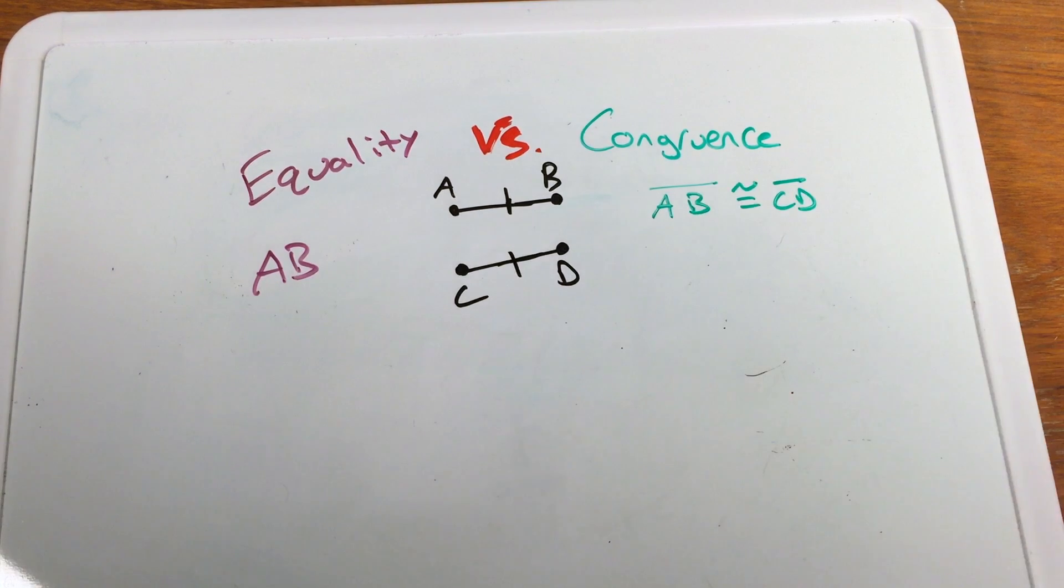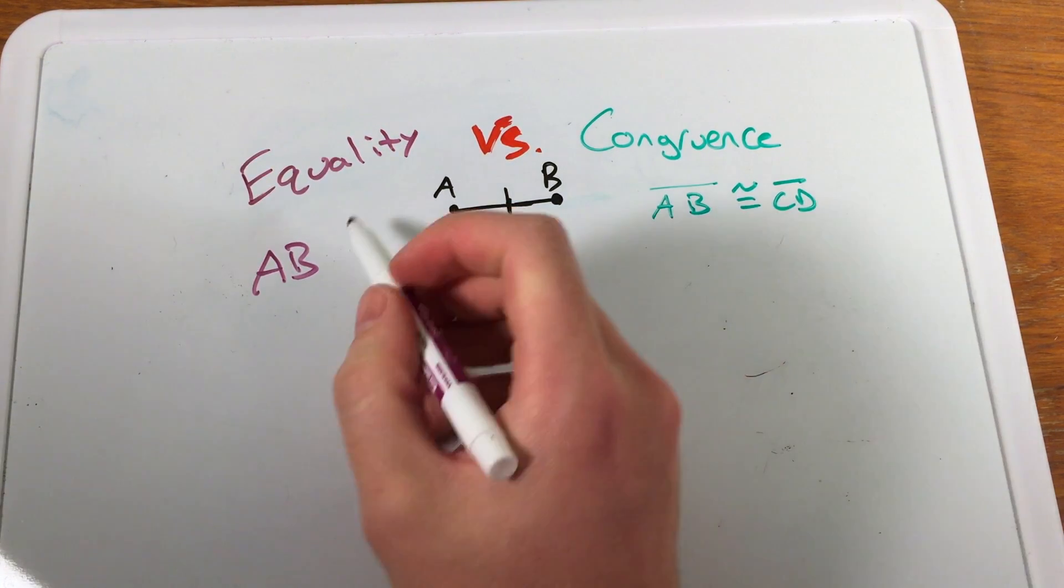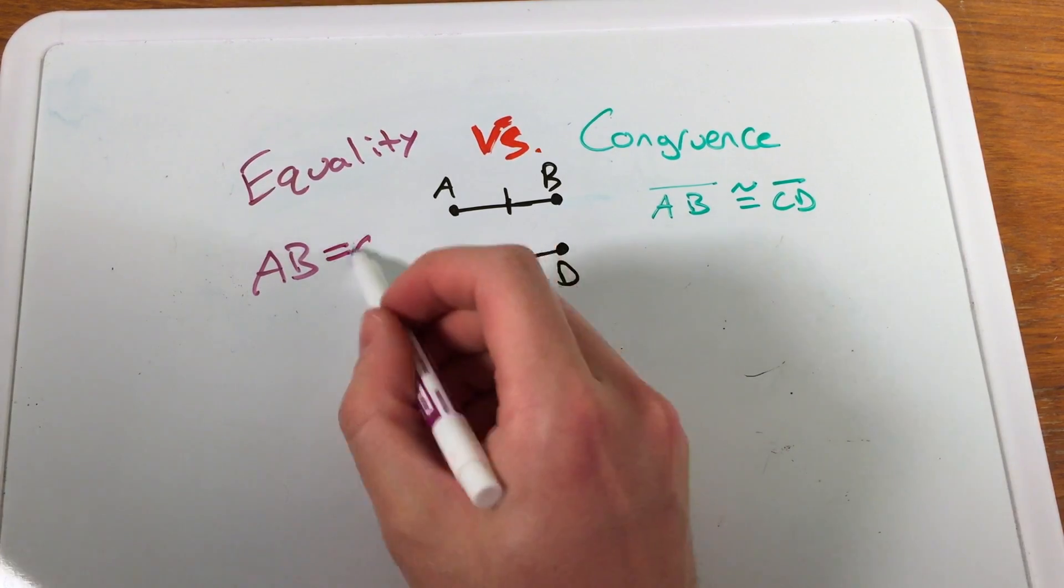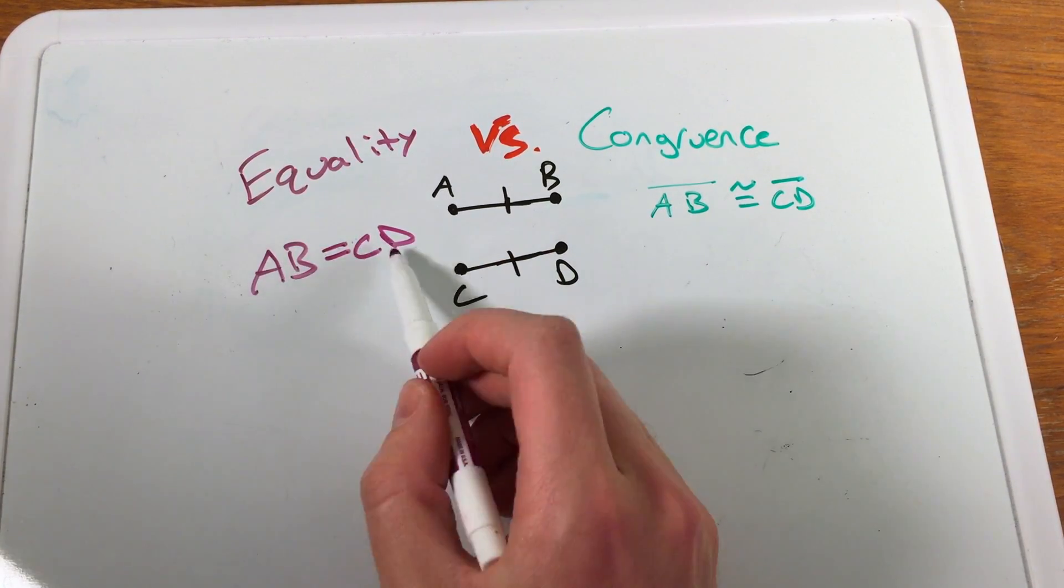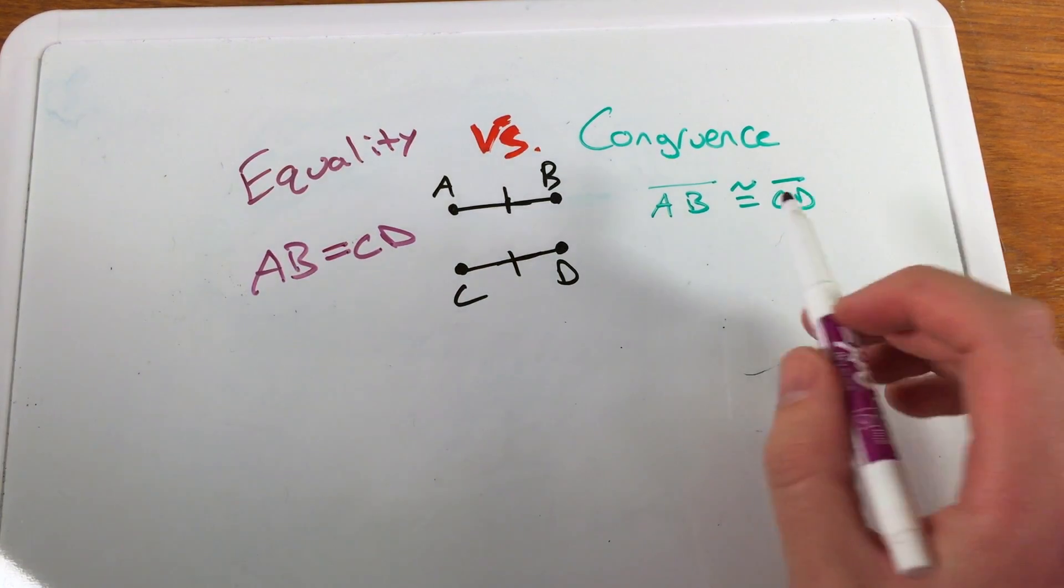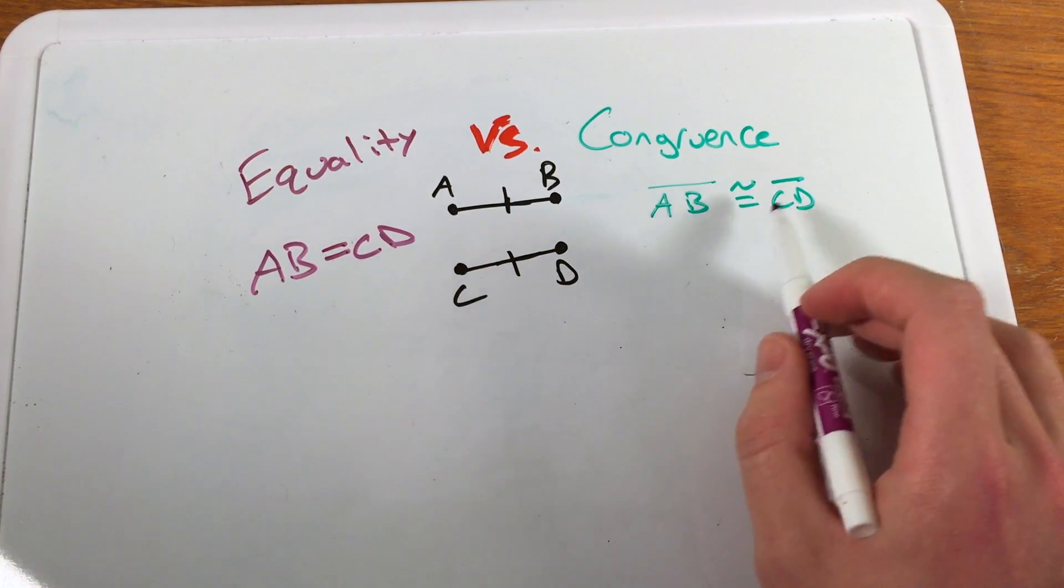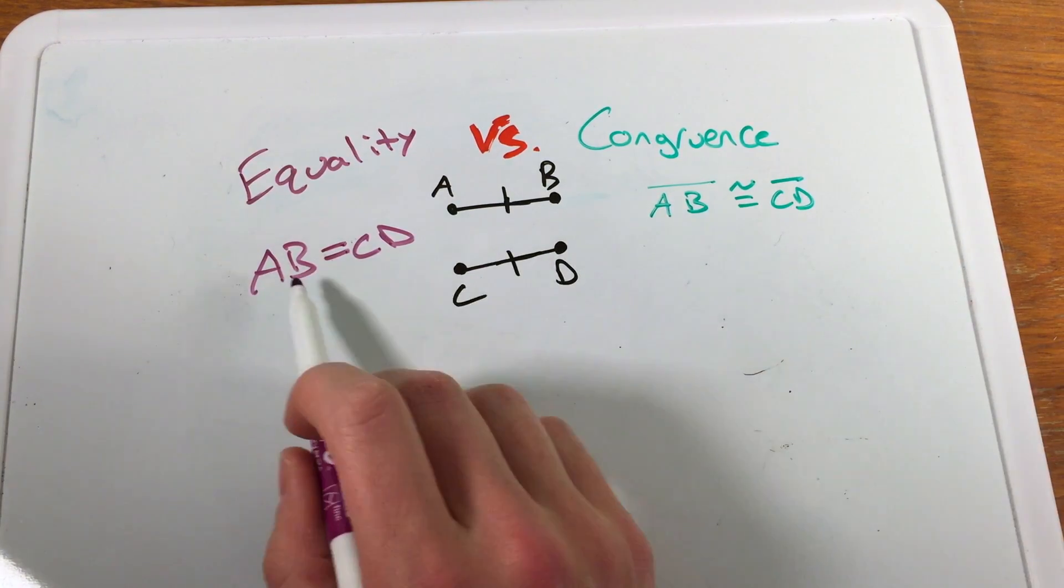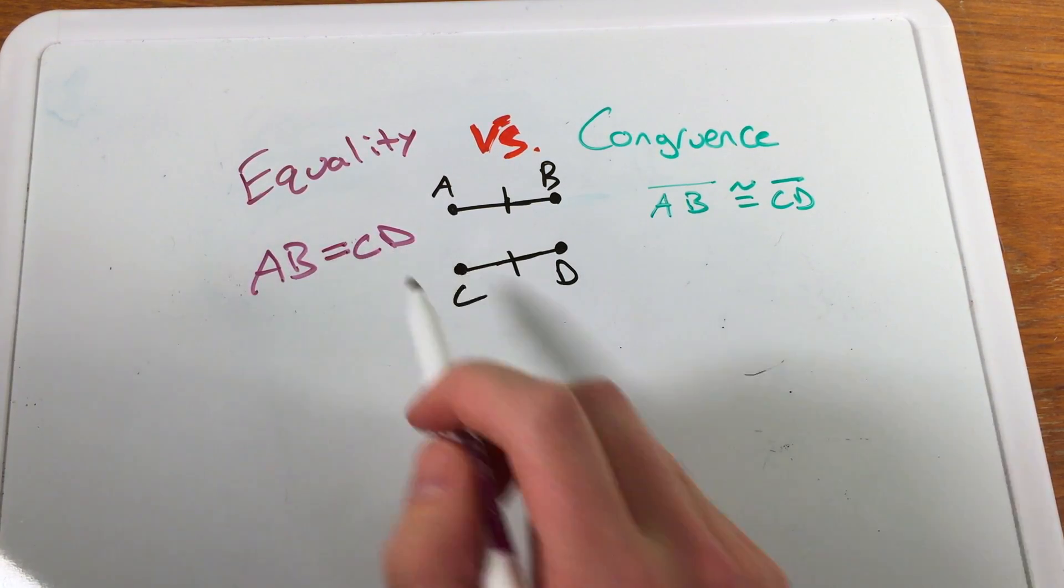We know that if segments are congruent, then their measurements are equal. That's what I would write here: CD. So AB, the measurement of AB, is equal to the measurement of CD. Again, AB the segment is congruent to CD, and AB the measurement is equal to the measurement of CD. These are big differences between them.